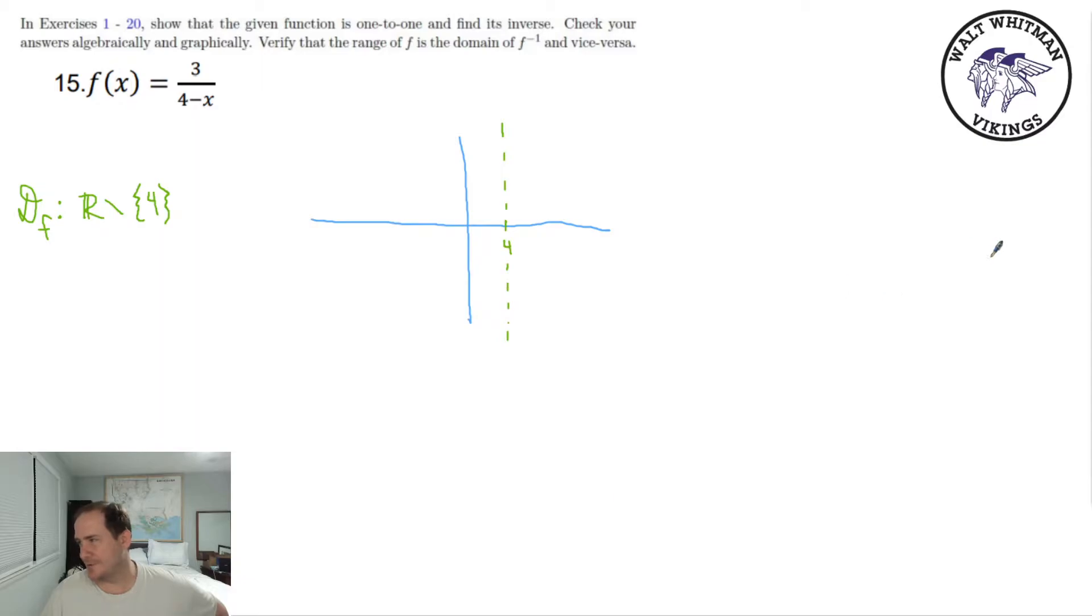Now there's a horizontal asymptote too, and we should remember that when the denominator has the greater degree, your horizontal asymptote is just automatically y equals 0. And that's going to dictate our range. Our range would be all reals except for 0.